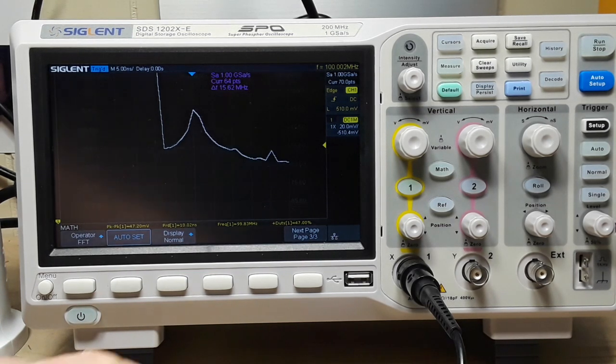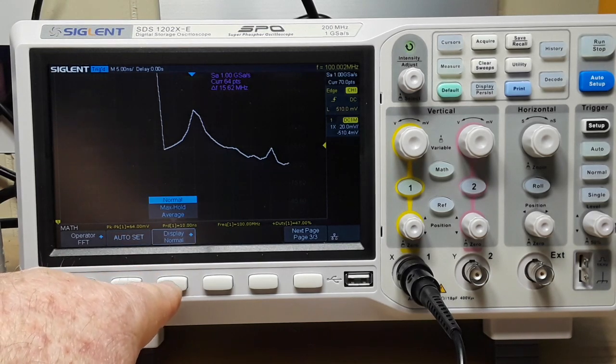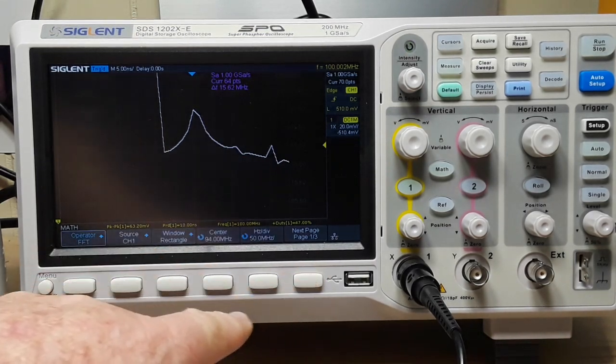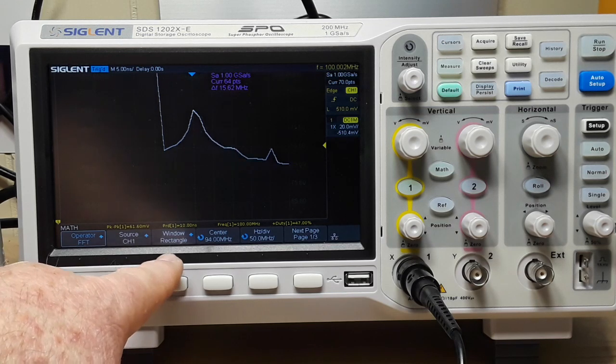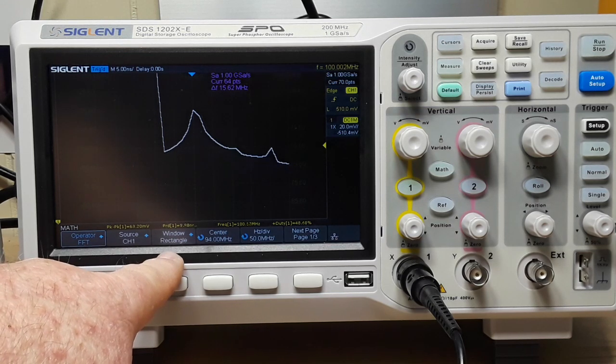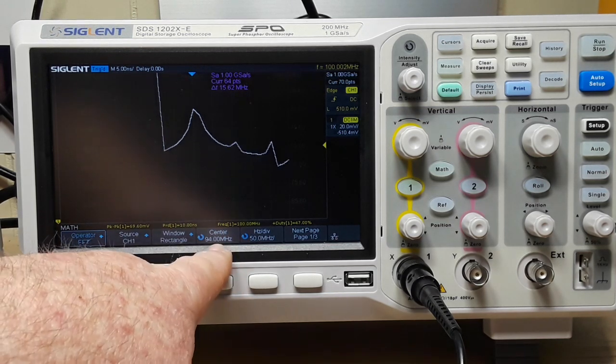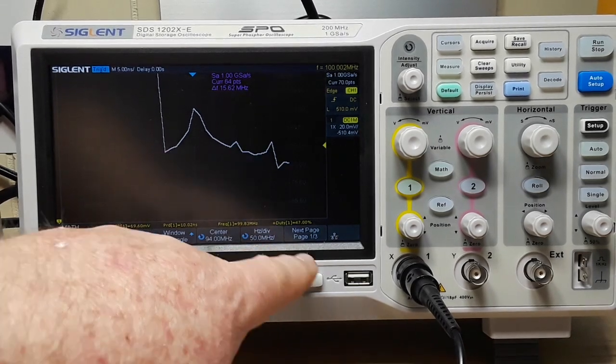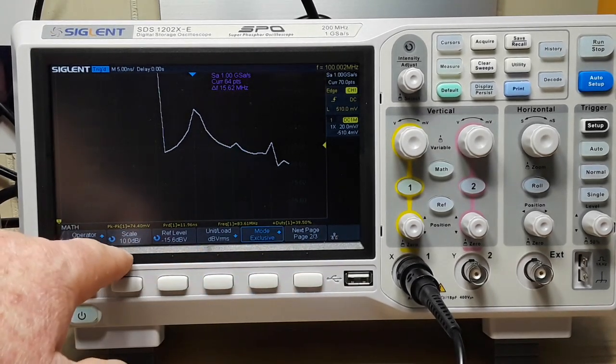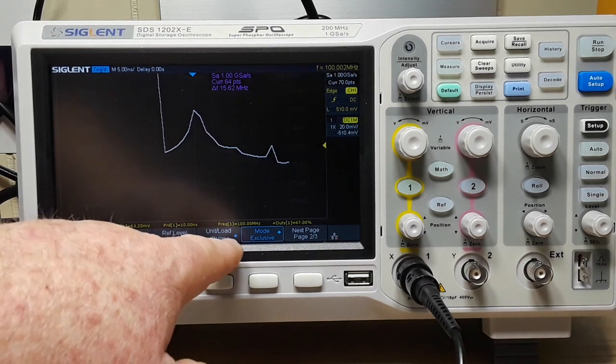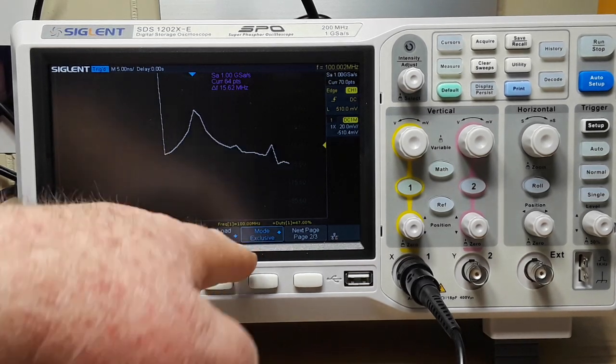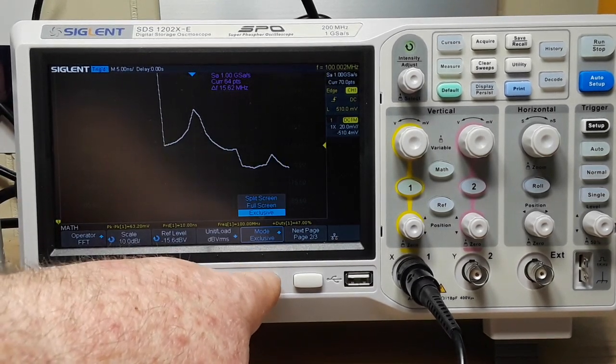We have display normal, max hold, and average. Our channel, what type of rectangular window we want to use, Hanning, rectangle. Center frequency, Hertz per division, our scale, reference level, units, and load.